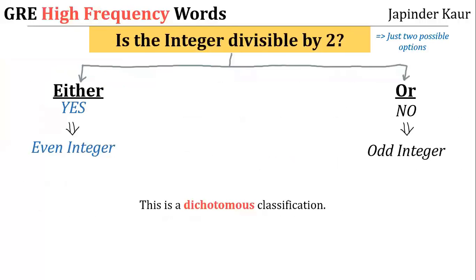Here's an example of a dichotomy. An integer can either be even or odd, because it is either divisible by two or not. So this is an either-or classification — a dichotomous classification.